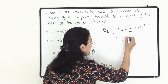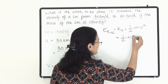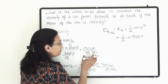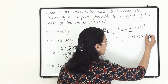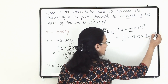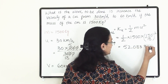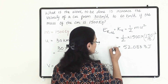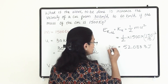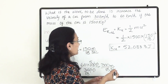So the initial kinetic energy = ½ × 1500 × (150/18)² = 52,083.3 joules. This is the kinetic energy at the initial stage.